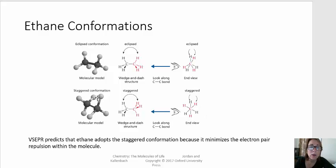And if we think about how electron pairs want to repel one another, then the staggered conformation is going to be much more stable because the hydrogens are farther apart.